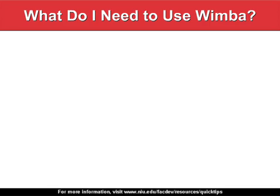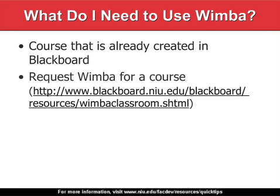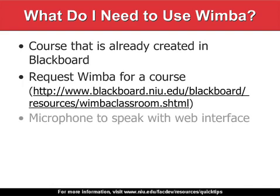What do you need to do to use WIMBA Classroom? First, you need to have a course already created in Blackboard. Then, go to the provided link to request access to WIMBA Classroom for that course. You will need a microphone to speak with the web interface. If you don't have a microphone, you can use a telephone number and passcode that are generated whenever a WIMBA Classroom is created.